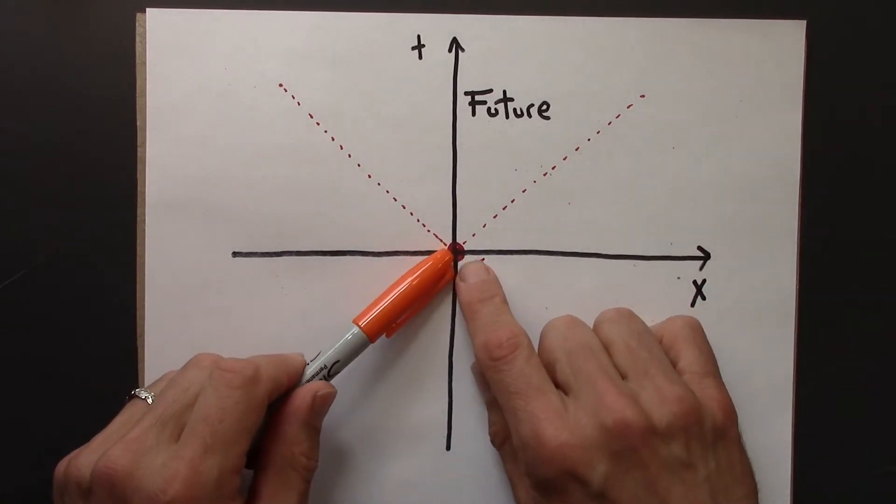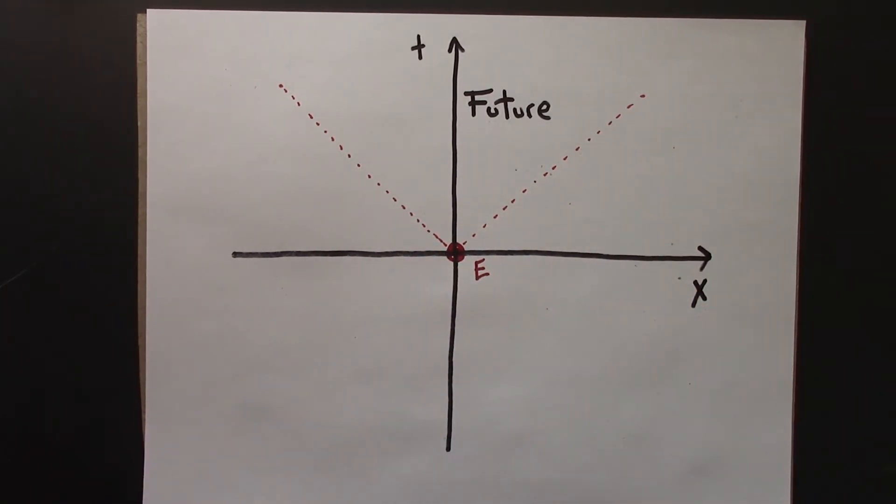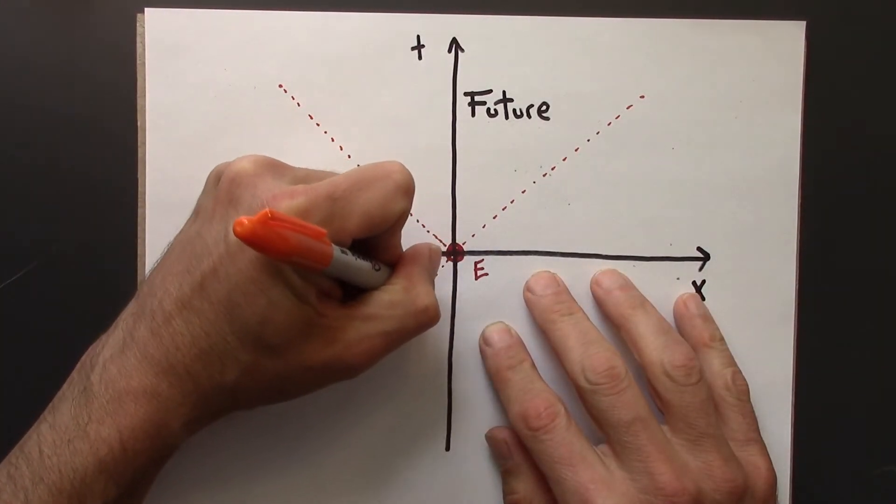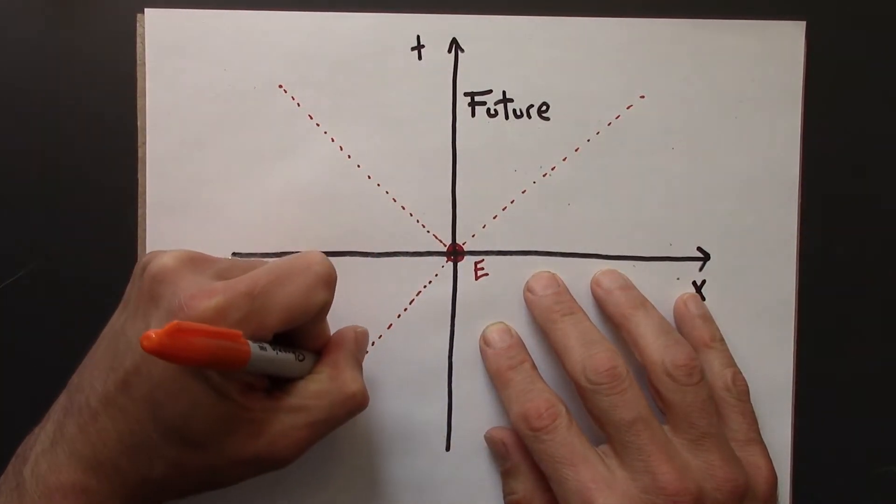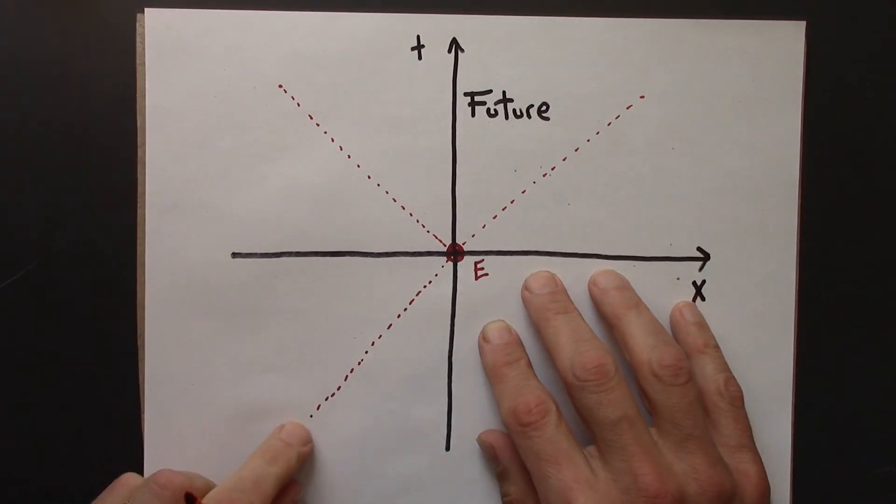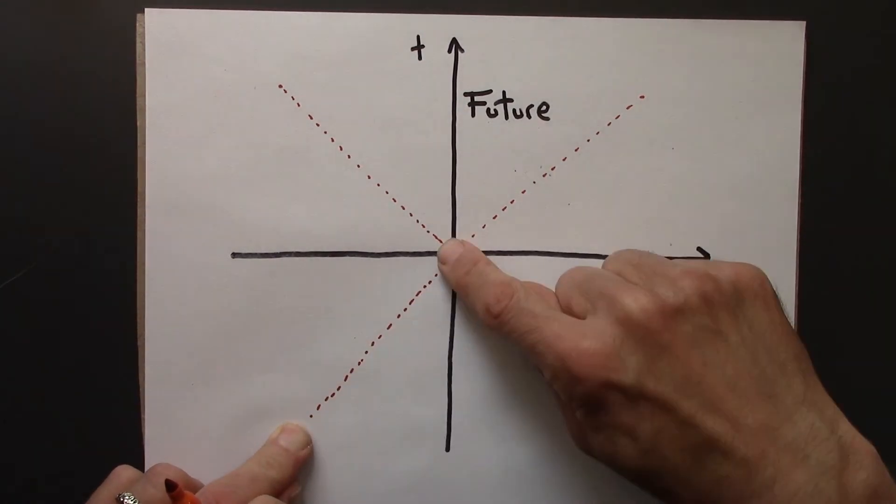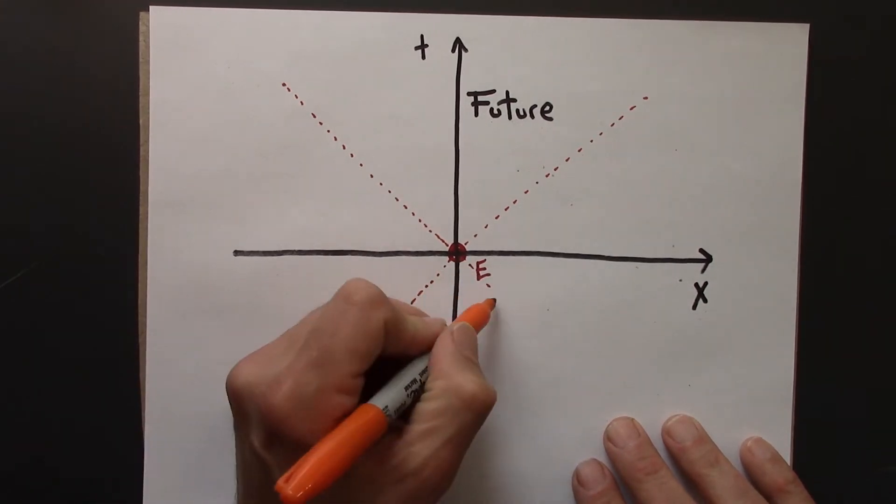Let's imagine for a moment that time was running backwards. So we had a light flash that went backwards in time. Or more realistically, we had a light flash here that happened to hit right at the event e.